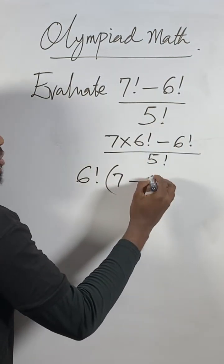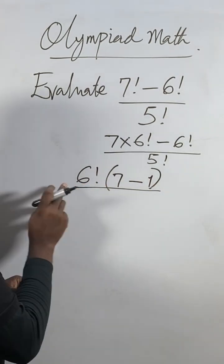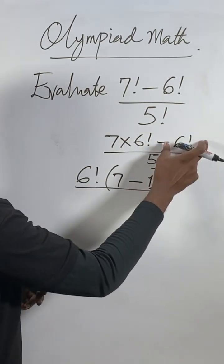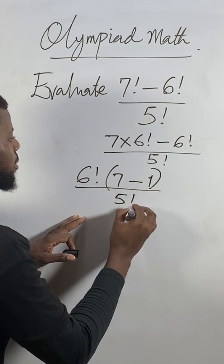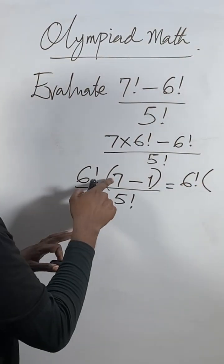If you factor out 6 factorial from the second term, only 1 will remain, not zero. So now we have 6 factorial times 7 minus 6 factorial times 1. This gives us 6 factorial times (7 minus 1) over 5 factorial.